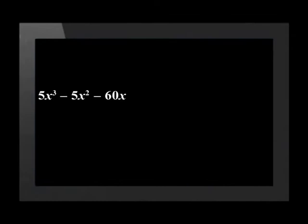5x³ minus 5x² minus 60x. Applying step one, we can see that 5x is the highest common factor. We take it out by dividing each term by the highest common factor to get the product.